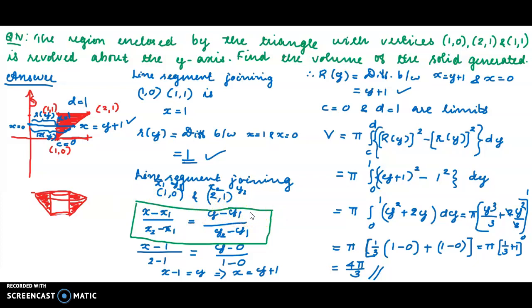The curves here are straight lines. This is also a practice problem: a solid of revolution of a triangle with given vertices. You can complete it — plot the graph, find the solid of revolution, set up the axis, determine the outer radius and inner radius, then evaluate the integral.